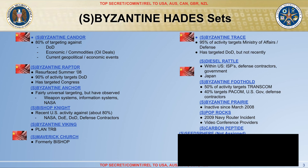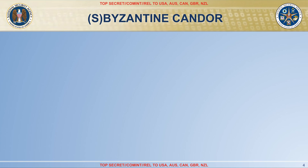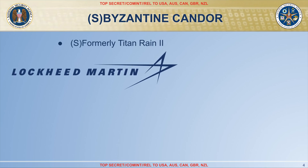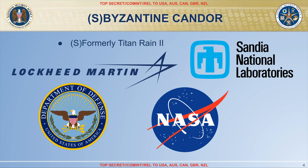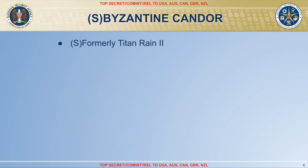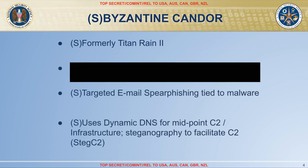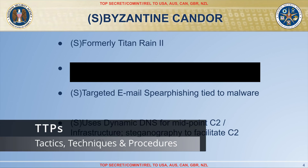That leads us to the focus of this presentation: Byzantine Candor. Previously they were calling this Titan Rain 2, which was a series of cyber-espionage operations that Chinese agencies started executing in 2003, allowing them to collect US defense secrets from government, military and defense contractors including Lockheed Martin, Sandia, NASA, DOD and more. It's said that many technologies China used later in advanced weapon systems, aircraft, and spacecraft originated from those cyber-espionage activities. The actor was using emails to specific individuals to deliver a custom cyber-espionage software implant, and for their C2 they were using dynamic DNS and steganography.